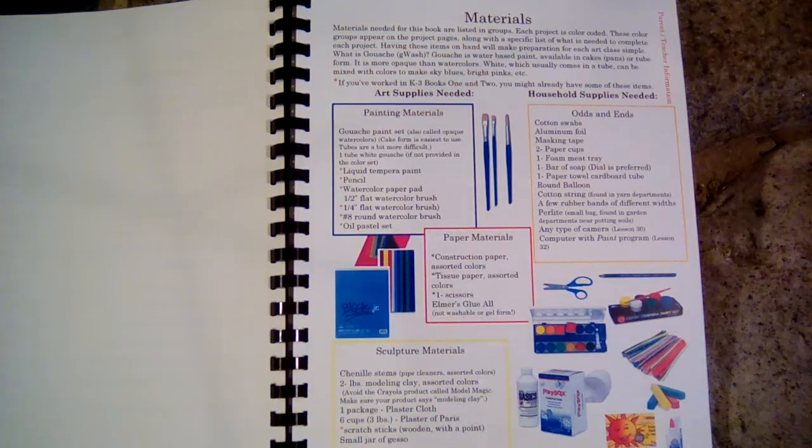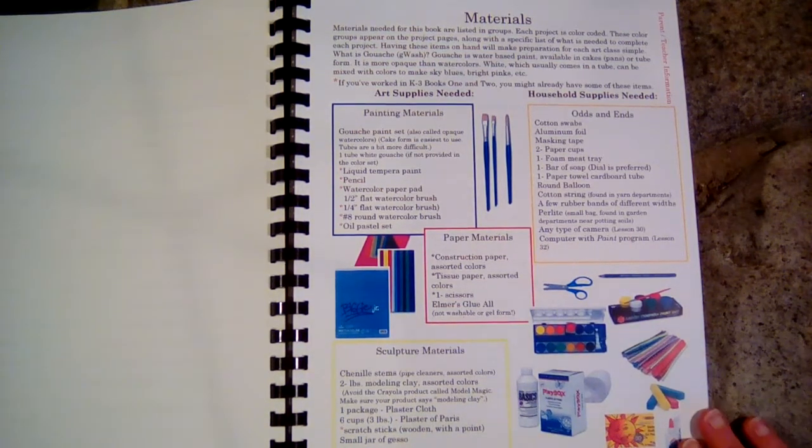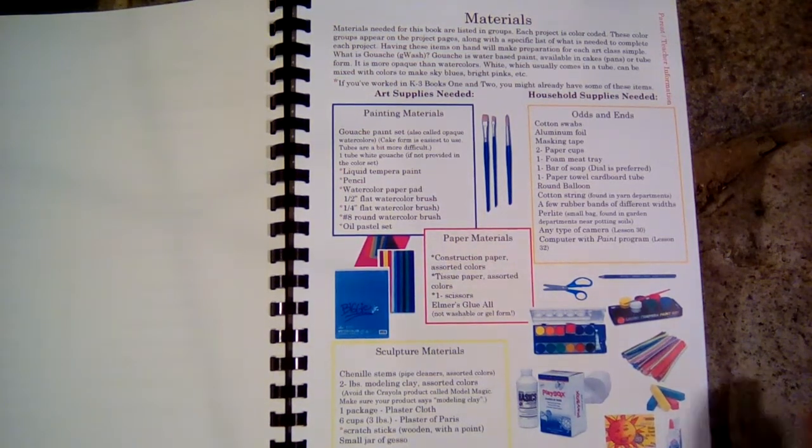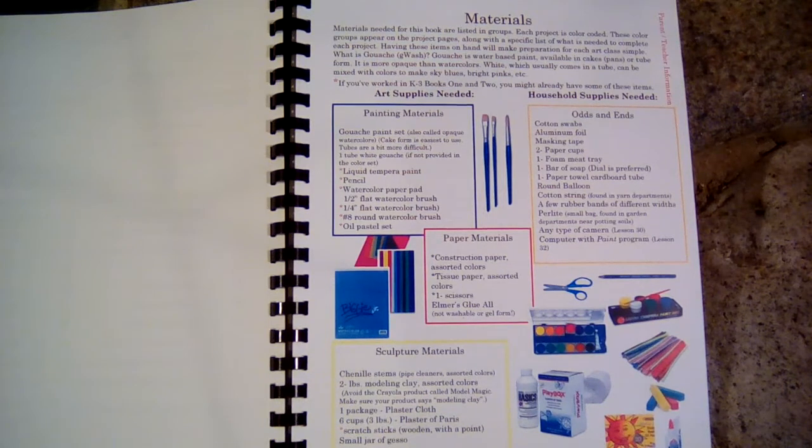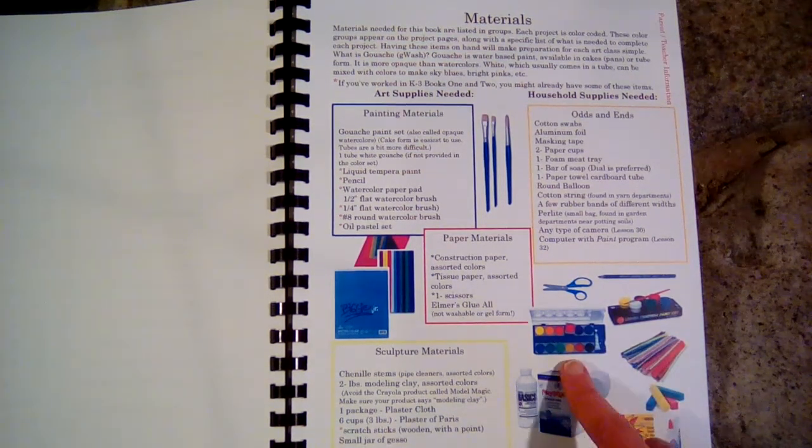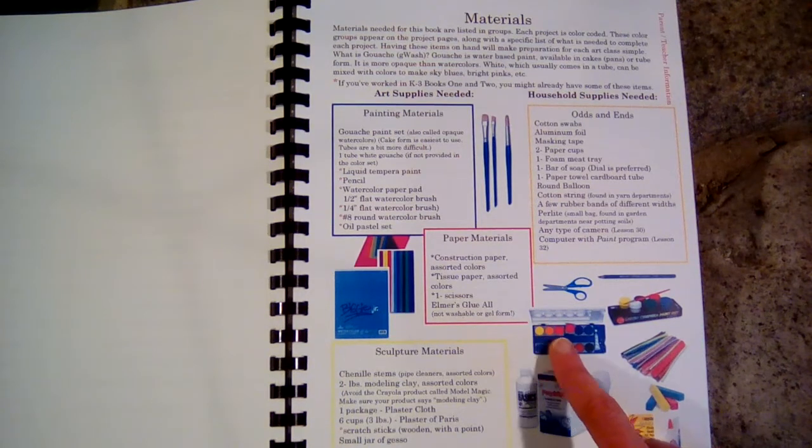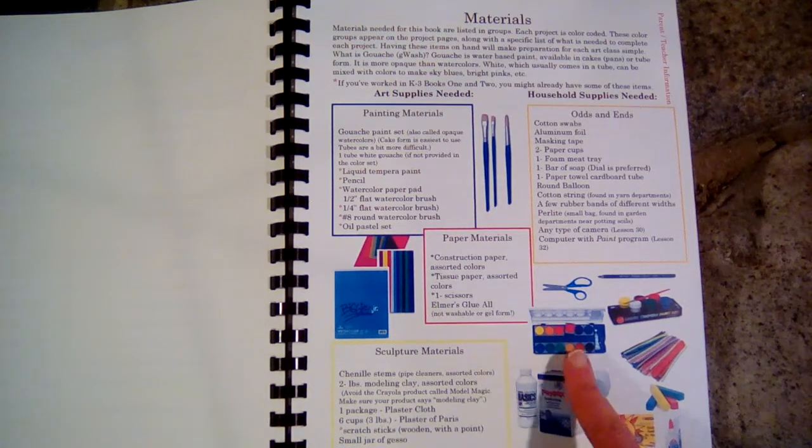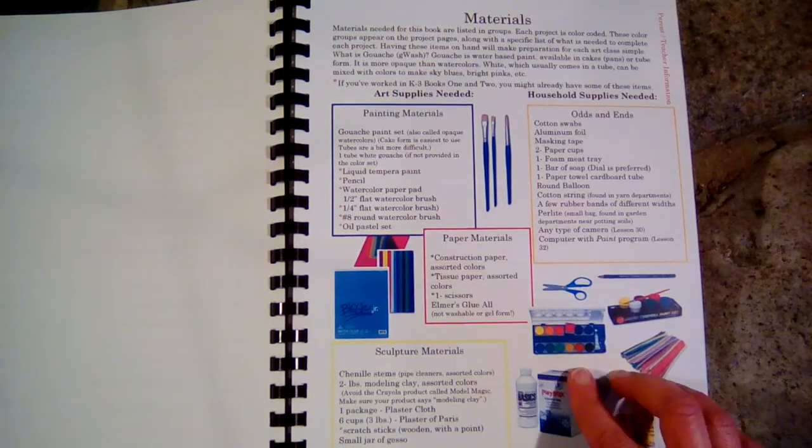One of the new things that we used in this book—and we did do this book this school year, we only have a few lessons left—one of the things that I like that we've done this year is using gouache paint. So these are little cakes of paint and they can come out in these little squares, but I really like how this looks. It has a different look than regular watercolors.